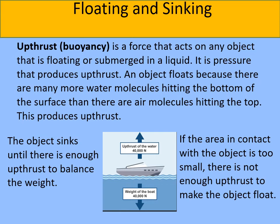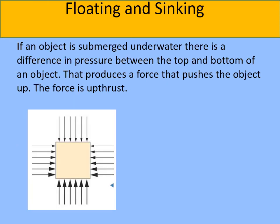In this diagram we have an object completely submerged underwater. The pressure on the object's top surface is different to the pressure on the bottom surface because there is more weight of all the water molecules on the bottom surface than on the top. As an object moves deeper underwater, the weight of water increases and there is more water above it, so the overall pressure on the object increases. There is a difference between the pressure on the top and bottom surfaces — this difference is the upthrust, and it's always more pressure on the bottom.